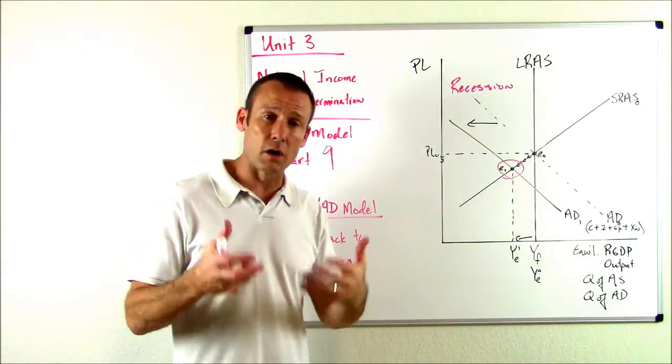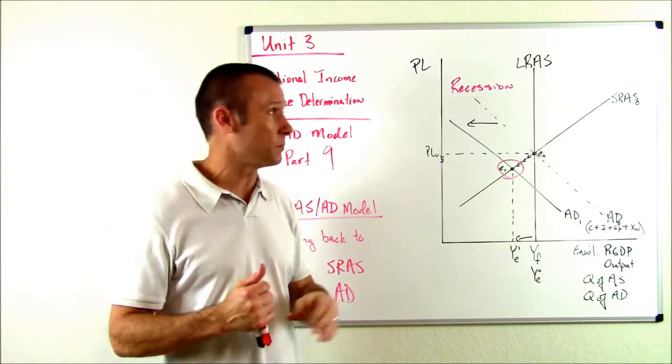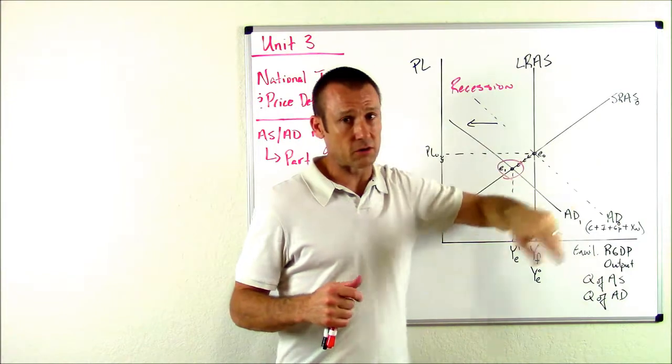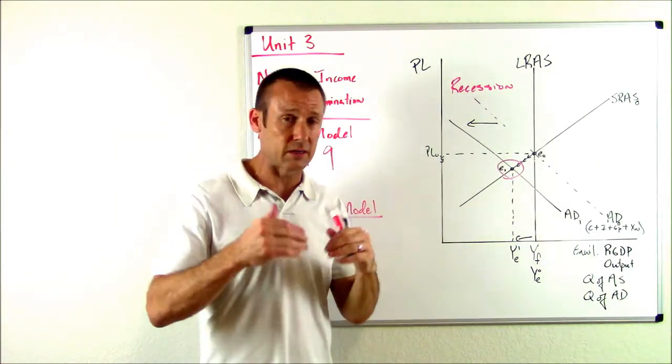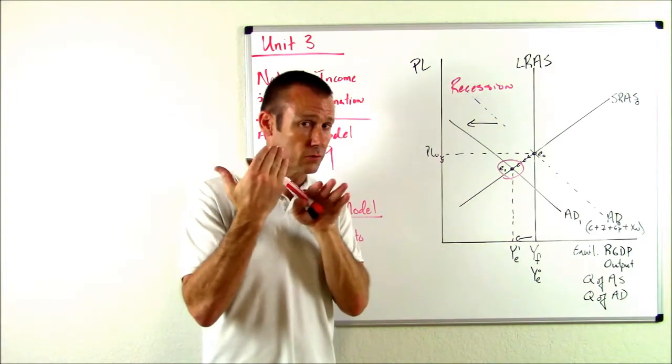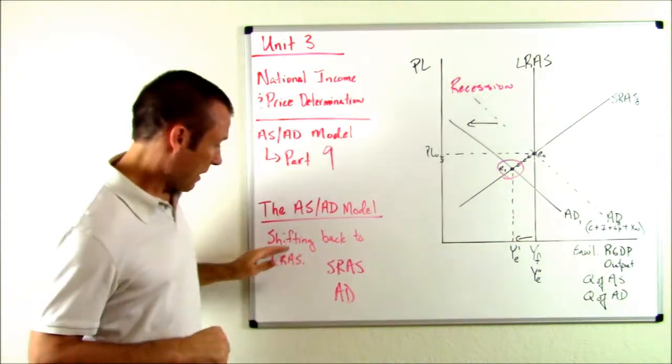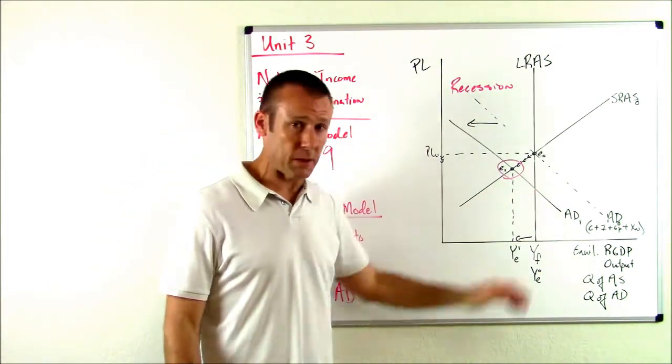Now, this is a short run equilibrium point. It's of course not a long run equilibrium point because we're not on the LR curve, but of course we are on the SR curve, which we are always on. We're always on SRAS and AD, or where those two curves intersect. So the question in front of us is how do we get back to that LRAS? Because eventually we're going to get back to it.